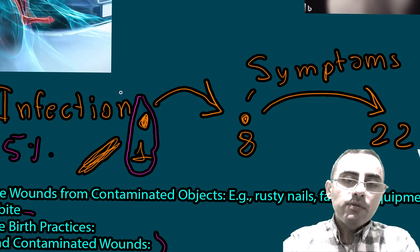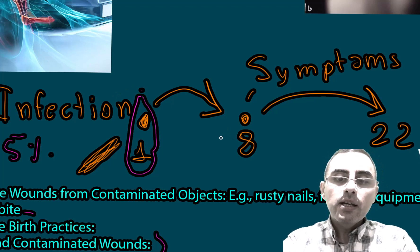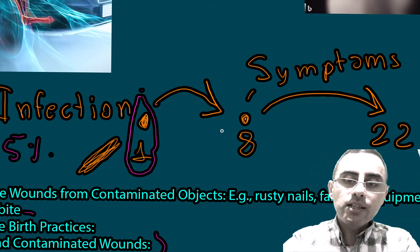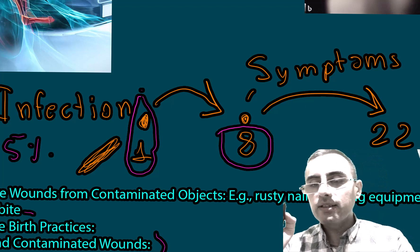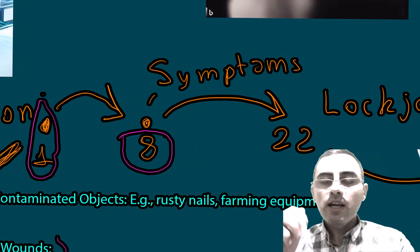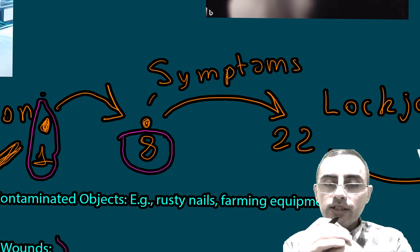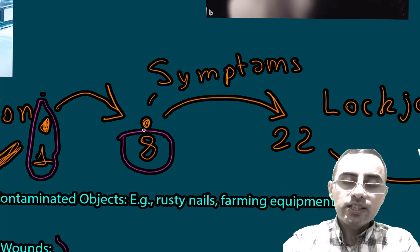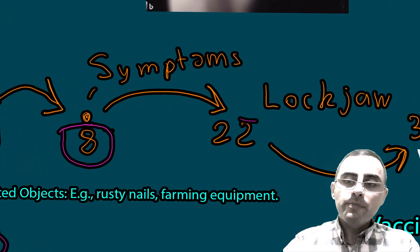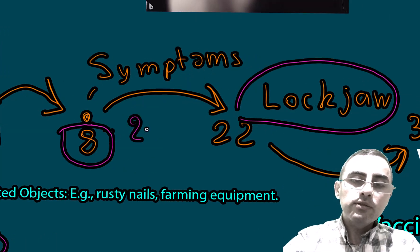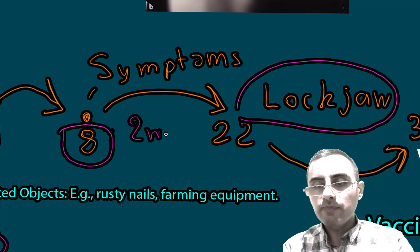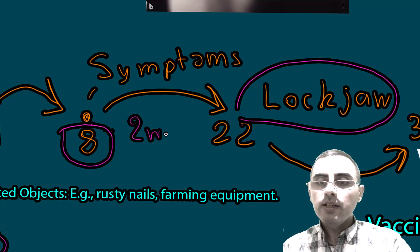From infection, the first symptoms can appear in as little as one day, but typically take around eight days to appear. Initial symptoms include muscle spasticity, muscle contraction, and rigidity. From those first symptoms to serious symptoms such as lockjaw, it takes around two weeks — approximately 22 days from the initial infection.